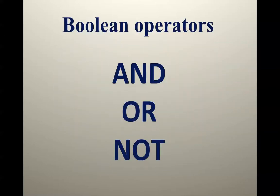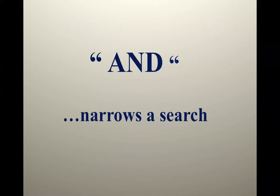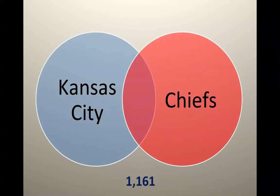Boolean operators are the words AND, OR, or NOT. AND narrows your search. 'Kansas City AND Chiefs' came up with a little over 1,100 hits. You can see in the middle blue are all the Kansas City articles, the lighter red circle contains the Chiefs articles, but the darker red in the middle — the 1,100 hits — contains articles with both Kansas City and Chiefs. That's how Boolean operators work.